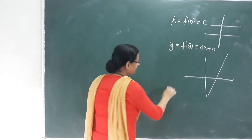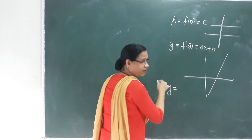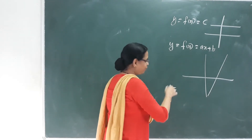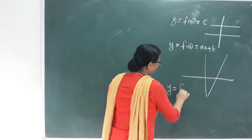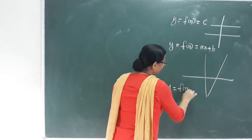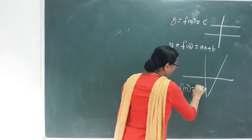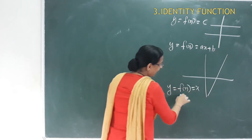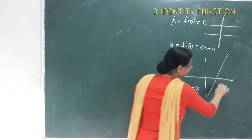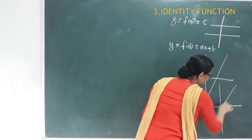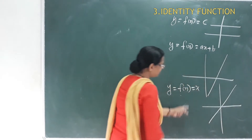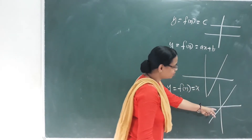The next is the identity function. The real function f from R to R is y = f(x) = x. This is the identity function, and its graph is a straight line passing through the origin.